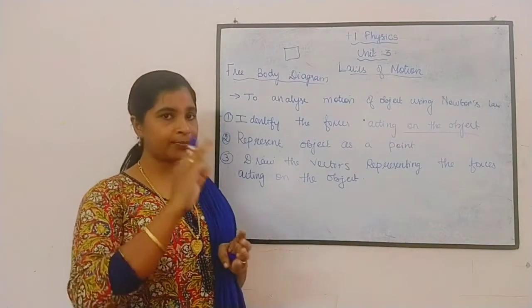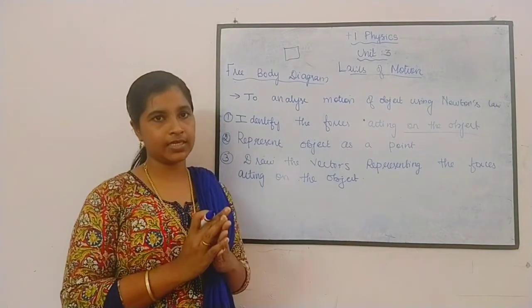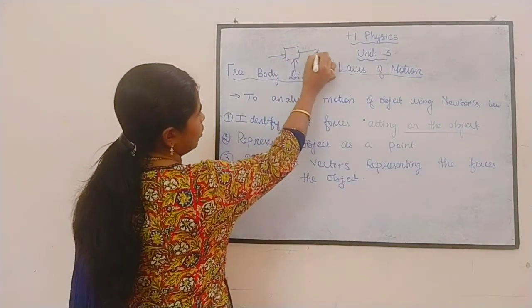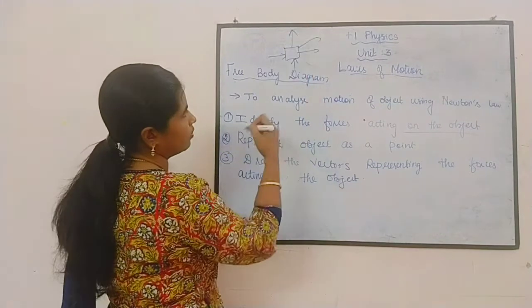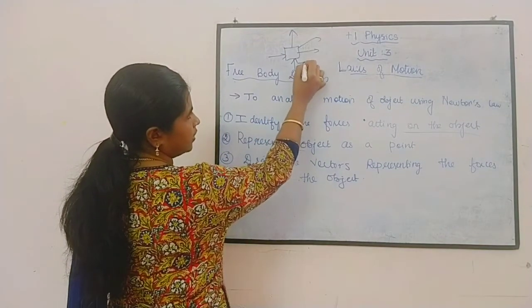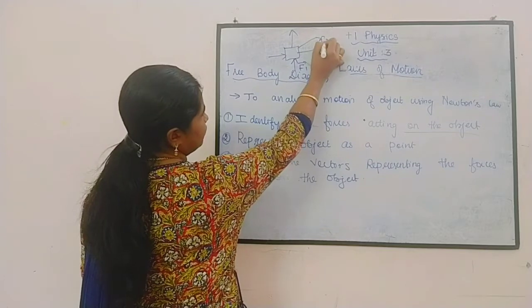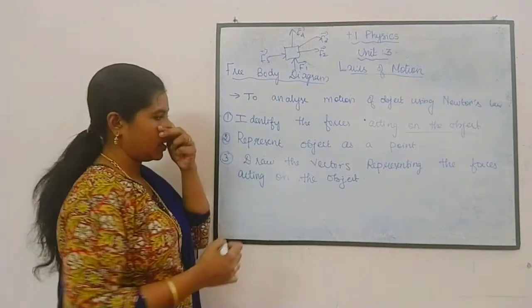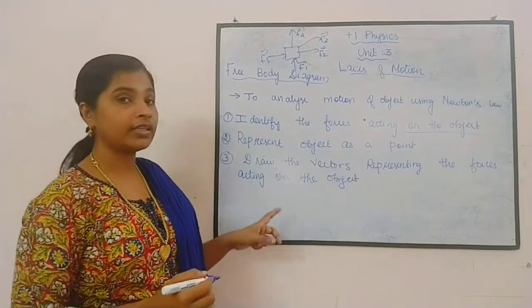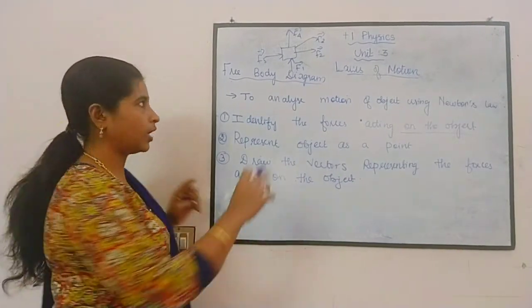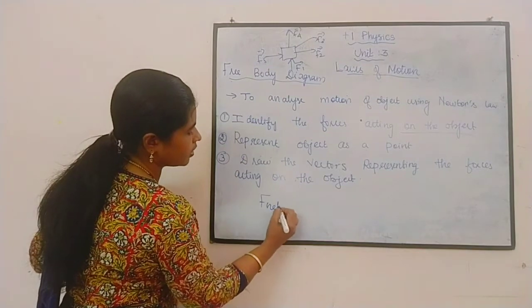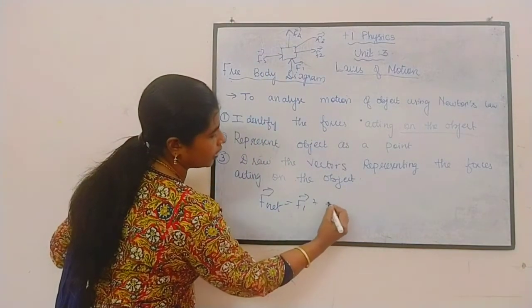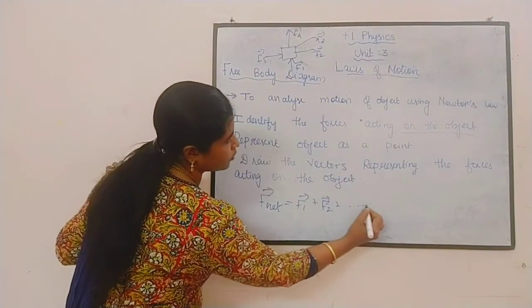Third: draw the vectors representing the forces acting on the object. Suppose this is an object and these are the forces acting on it. We have to represent them in vector form: F1, F2, F3, F4, and so on, whatever the forces may be. Finally, we calculate the total net force. The net force is equal to the sum of all the forces — F1, F2, and so on up to F5.